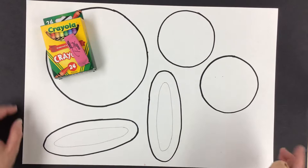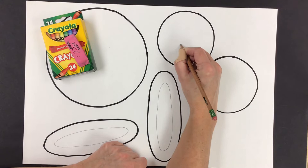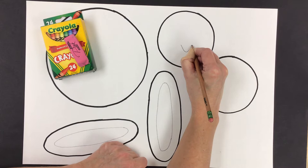For our first face, we're going to start with the nose. This is an upside down triangle with curved corners.